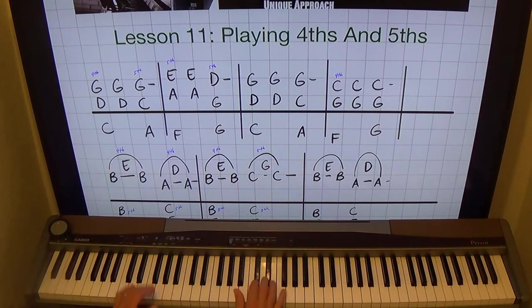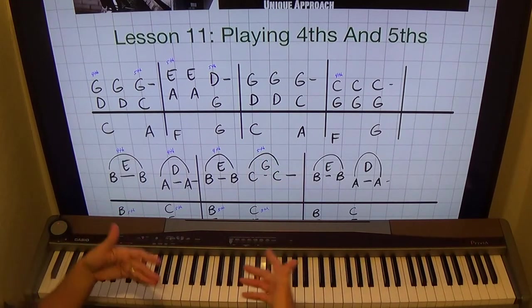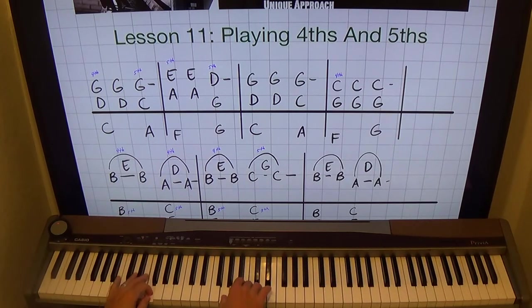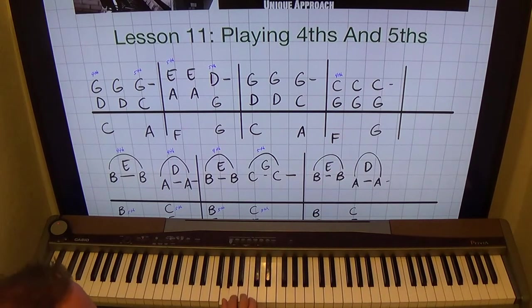So we move on to the next measure. We have the fourth and fifth again, and I just wrote this to give you something to go on, to get started with it, and then you can move on from there. Here I have just an open fourth from G to C, right? One, two, three, four.